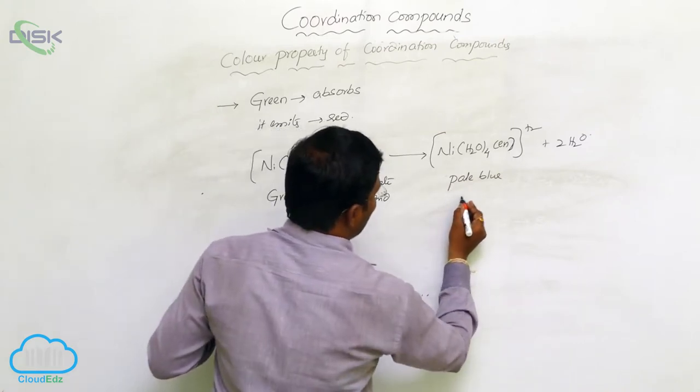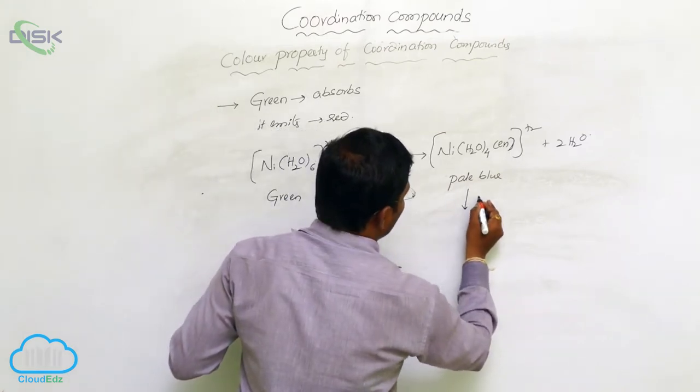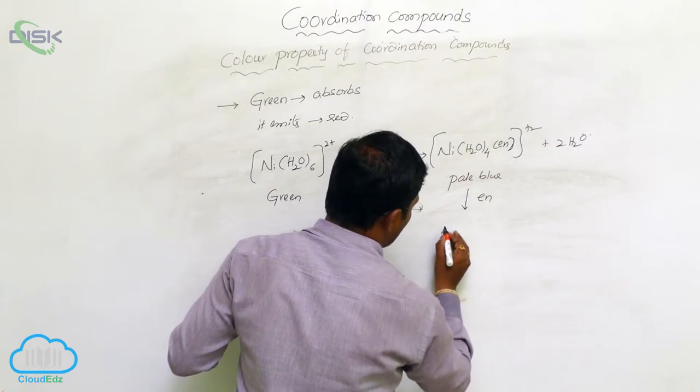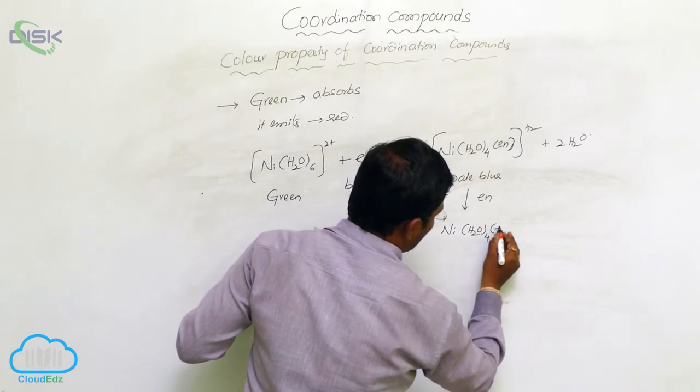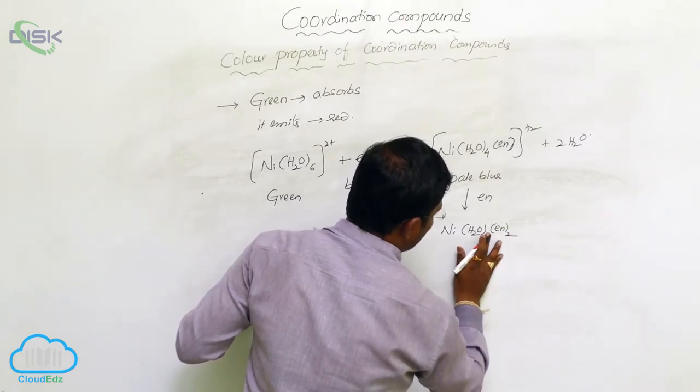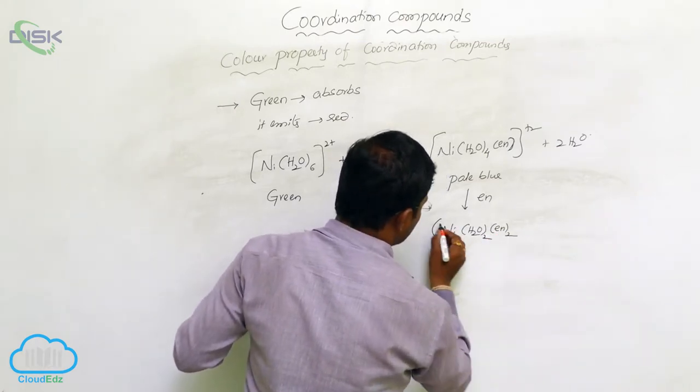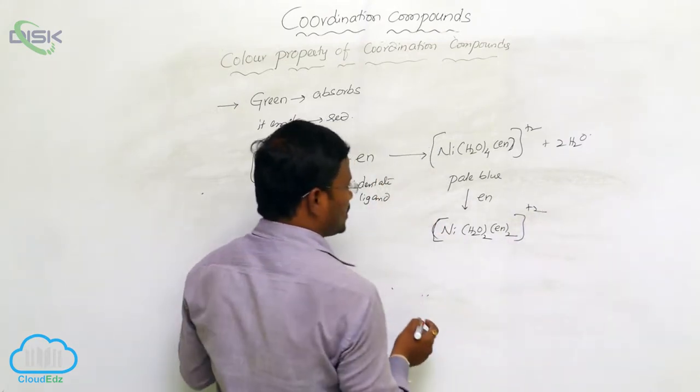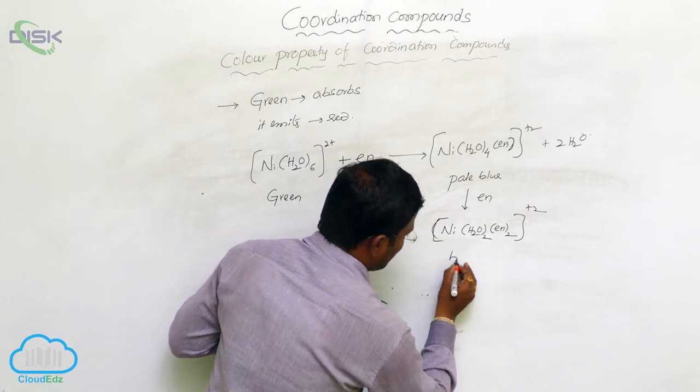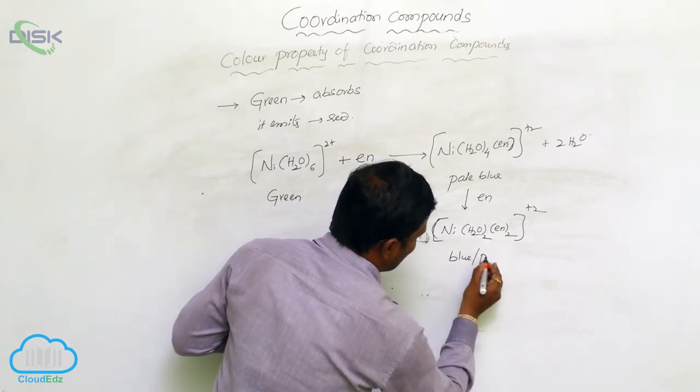Now the pale blue color complex, when interacted with one more molecule of ethylenediamine, produces a compound where out of four water molecules, two water molecules are eliminated. In place of this, two ethylenediamines substitution takes place, then the resulting compound is blue or purple in color.